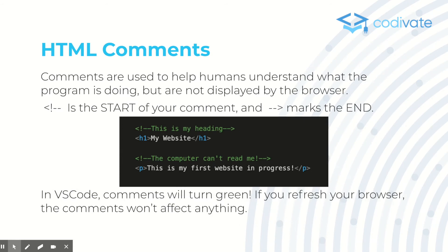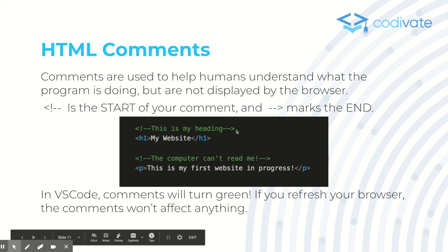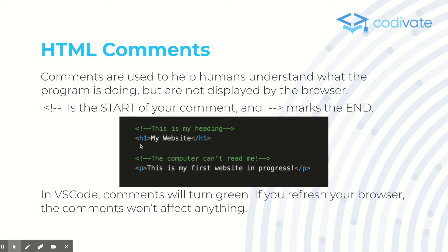HTML comments are used to help humans understand what the program is doing, but they're not displayed by the browser. To write an HTML comment, use the less-than sign, exclamation mark, and two dashes, then write your comment — for example, 'This is my heading' — and close it with two dashes and the greater-than sign. In VS Code, comments will turn green. If you refresh your browser, comments won't affect anything or the output.